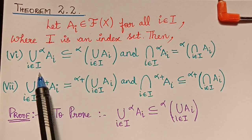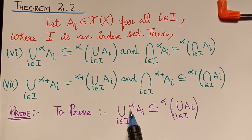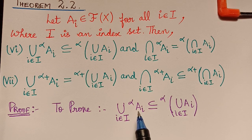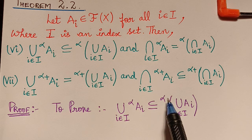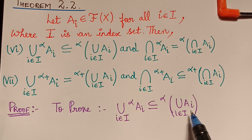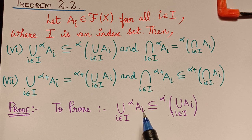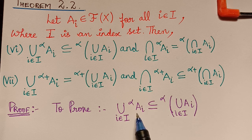We shall first prove this property: the union of alpha cuts of the fuzzy sets — that is, taking the alpha cut of various fuzzy sets and then taking their union — is a subset of the alpha cut of the union of all the fuzzy sets. We also need to prove that this is not an equality, meaning these two sets are not equal.